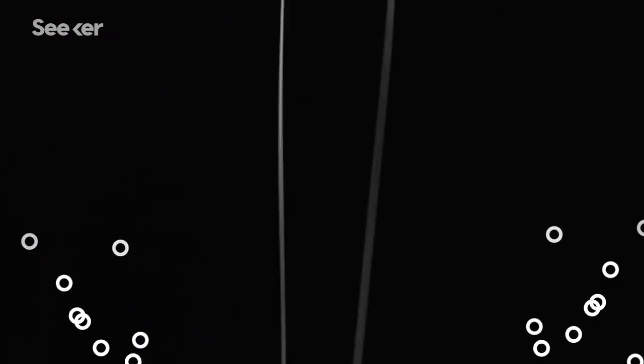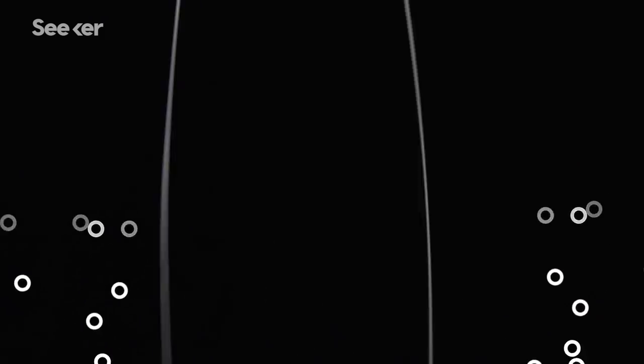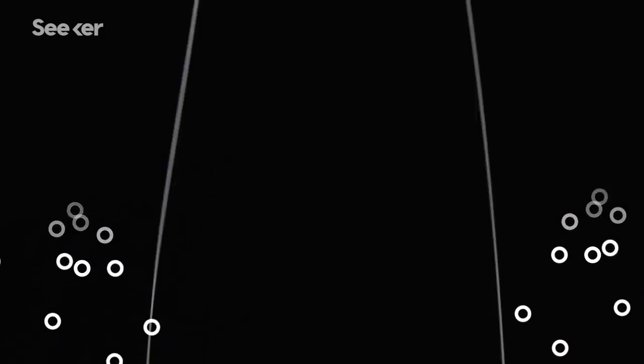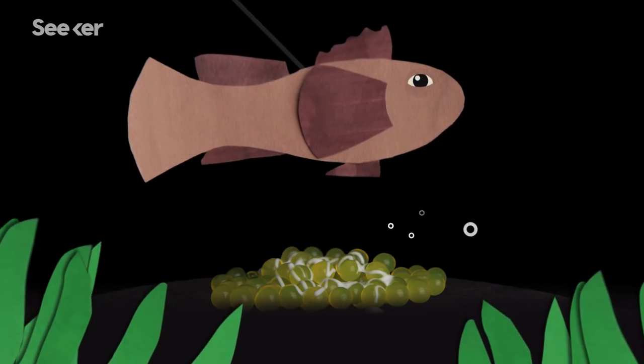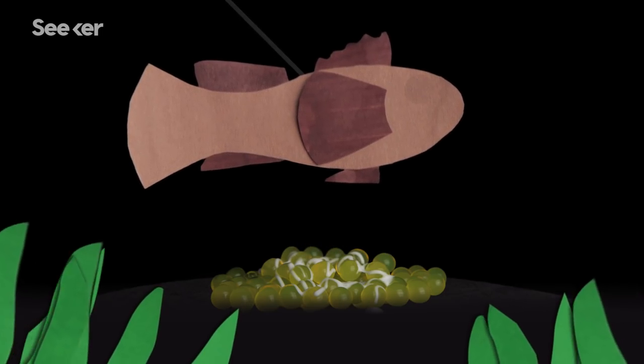The sneaker can take advantage of the speed-enhancing compounds by mixing his ejaculate with the territorials. Any eggs that the sneaker male fertilizes will be protected by the larger, stronger, territorial male.